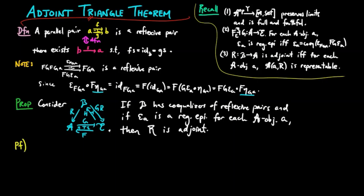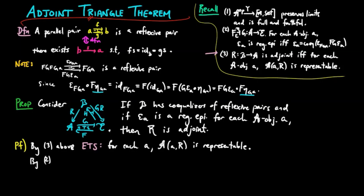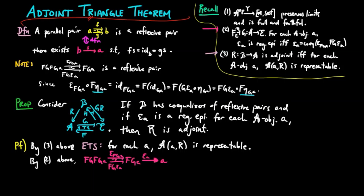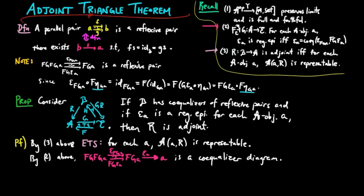For the proof, by fact 3 above it is enough to show that for each object a the presheaf a(a, r-) is representable. By fact 2 above we have epsilon a as the co-equalizer of epsilon fga and fg epsilon a.